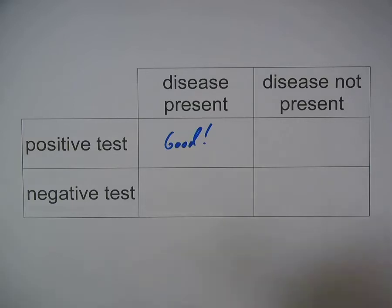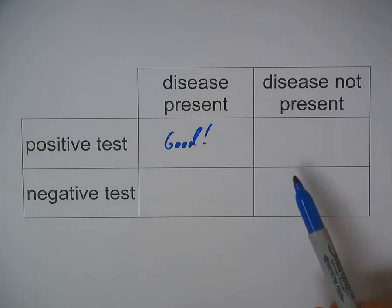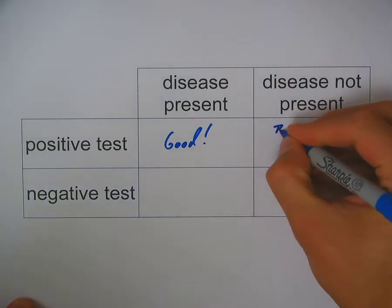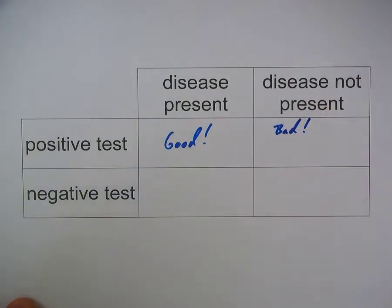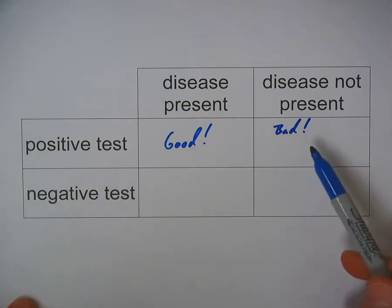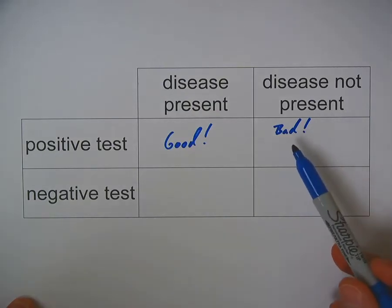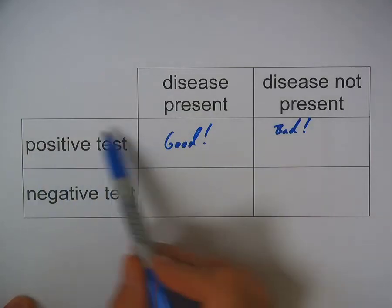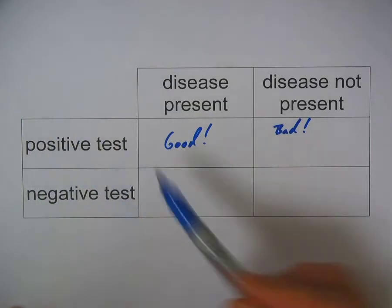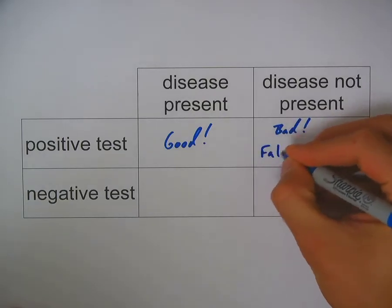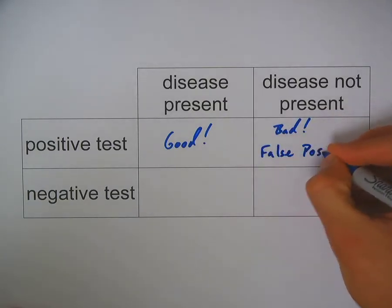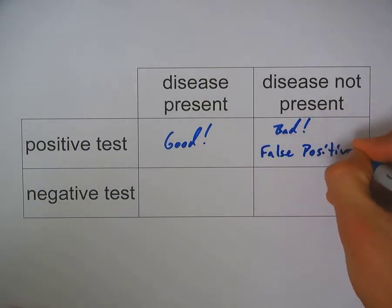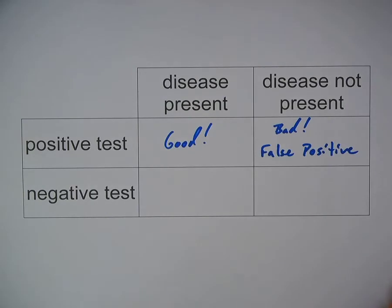Now if we look at a positive test when the disease is not present, that is bad. We'd be committing an error here — there'd be a flaw in the test. Since this is a positive test that is incorrect, we call this a false positive.